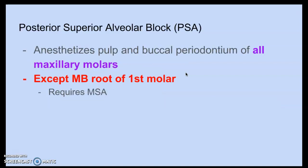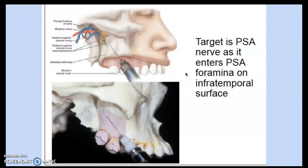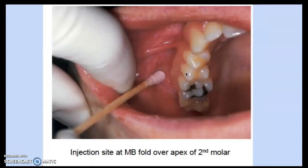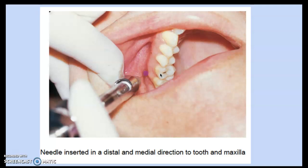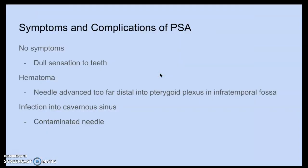The PSA anesthetizes all the maxillary molars except the mesial buccal root of the first molar — that one requires the MSA. The target of the PSA nerve is as it enters the PSA foramen on the infratemporal surface. The injection site is at the mesial buccal fold over the apex of the second molar, with the needle inserted in a distal and medial direction.